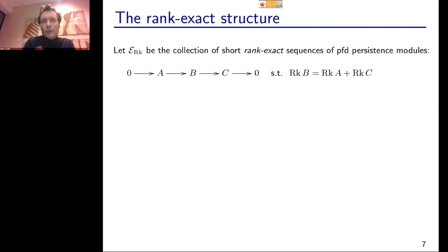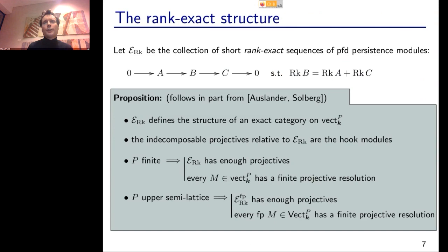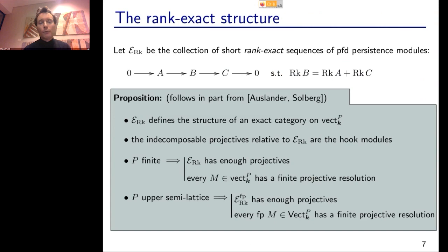This collection E_rank, by standard results — citing a paper by Auslander and Solberg from the 1990s — defines the structure of an exact category on our module category. Moreover, whenever P is finite or an upper semi-lattice, this exact structure has enough projectives. Every pointwise finite dimensional module (same as finitely presentable when P is finite) has a finite projective resolution.